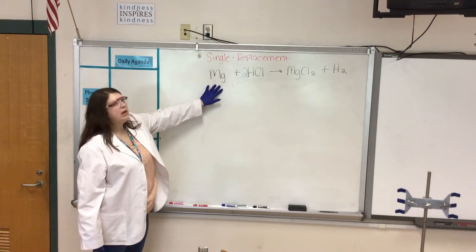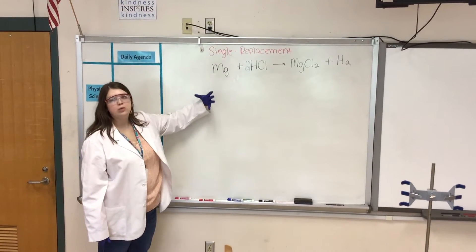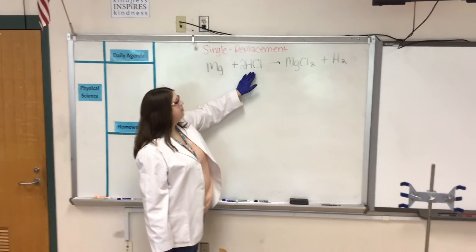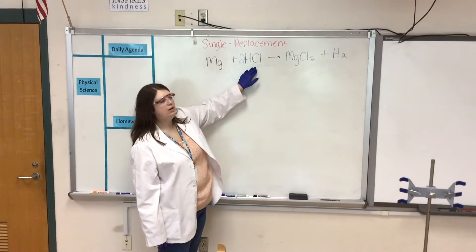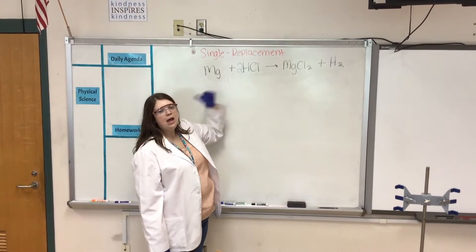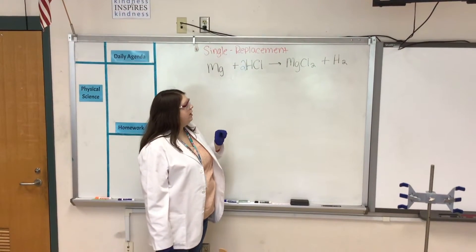This is a single replacement reaction because our cations are switching places. Magnesium is going to go in and bond with chlorine, with that anion chlorine, to form a new cation, and that's going to push out our previous cation, hydrogen, out of this compound.